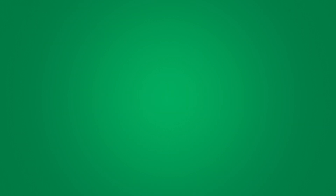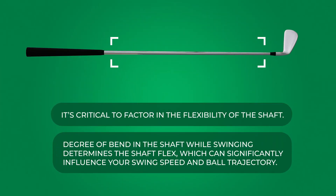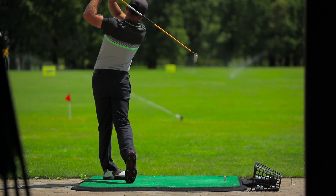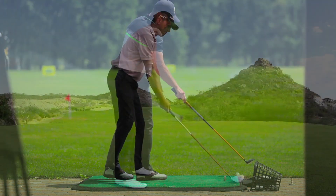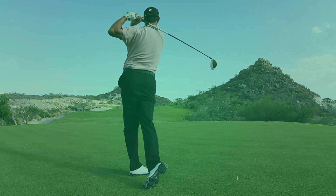When it comes to club selection, it's critical to factor in shaft flex — the degree of bend in the shaft while swinging — which can significantly influence your swing speed and ball trajectory. In general, golfers with less swing speed should go for more flexible shafts, while golfers with more swing speed would benefit from stiffer ones.